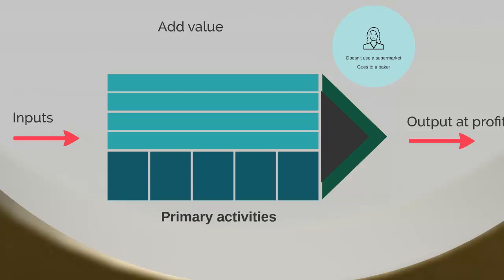And this is because of the added value she gets, or that she perceives, from going to the baker. That in essence is what the value chain is. Before I go on to talk about primary and support activities, if you are concerned that some of the words around the screen are being cut off by the frame at this point, please do not worry — we're only focusing on the individual parts of the value chain.